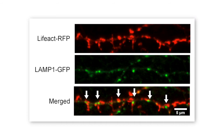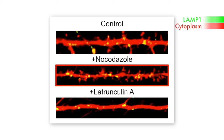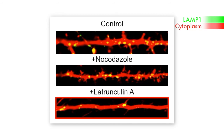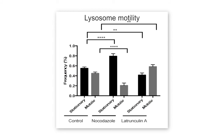Gu et al. examined the role of both the microtubule and actin cytoskeletons in regulating dendritic lysosome motility. When microtubules were disrupted with nocodazole, nearly everything stopped moving. Conversely, when F-actin was disrupted with latrunculin A, there was an increase in the mobile pool of lysosomes, suggesting that F-actin or F-actin binding proteins may be involved in the sequestration or stopping of lysosomes at spines.